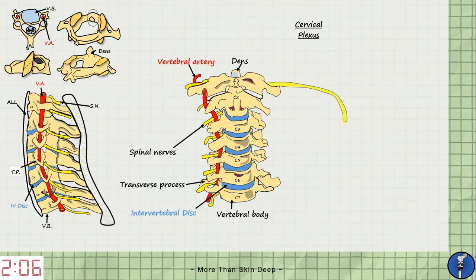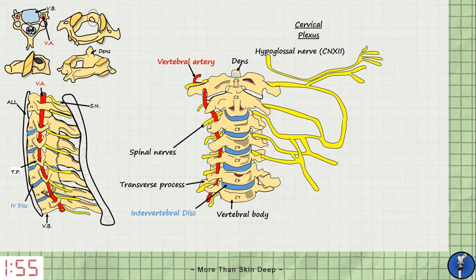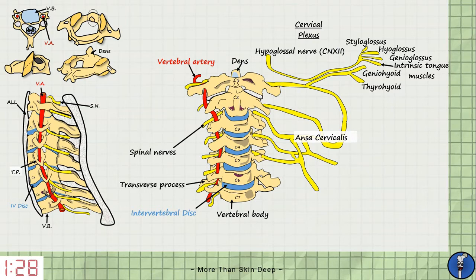The spinal nerves loop together distally to form the cervical plexus. The cervical plexus is formed by the spinal nerve roots of C1 to C4. The ventral ramus of C1 gives off a branch which accompanies the hypoglossal nerve, also known as cranial nerve 12. The hypoglossal nerve innervates some of the extrinsic muscles of the tongue — namely the styloglossus, hyoglossus, and genioglossus — as well as the intrinsic muscles of the tongue. The C1 branch itself innervates the geniohyoid muscle, which is a suprahyoid muscle, and the thyrohyoid muscle, which is an infrahyoid muscle. The C1 nerve fibers then intermingle with C2 and C3 to form a loop known as the ansa cervicalis.